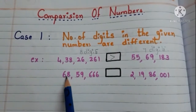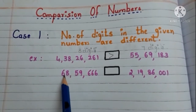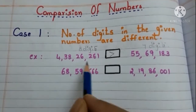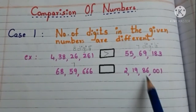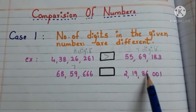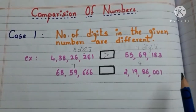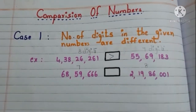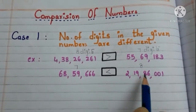Let us go to another one. First, let us count how many digits are there in this number. 1, 2, 3, 4, 5, 6, 7. 7 digits. And count how many digits are there in this number. 1, 2, 3, 4, 5, 6, 7, 8. 8 digits. So a 7-digit number is less than an 8-digit number. So this number is less than this number.